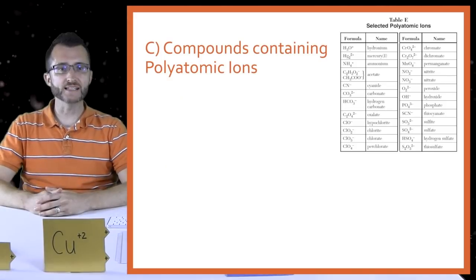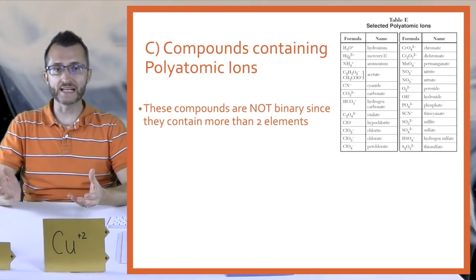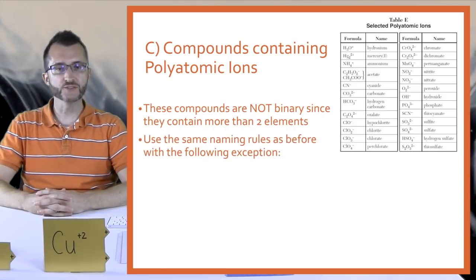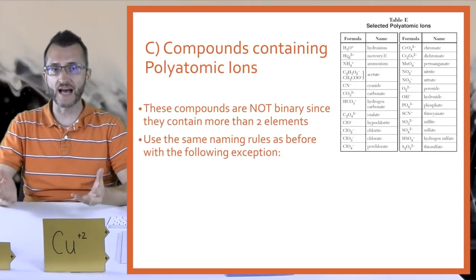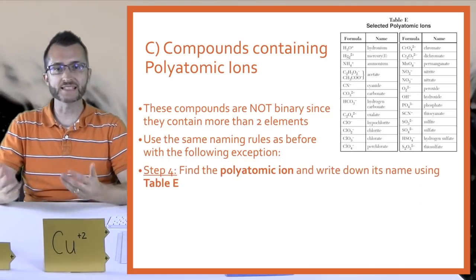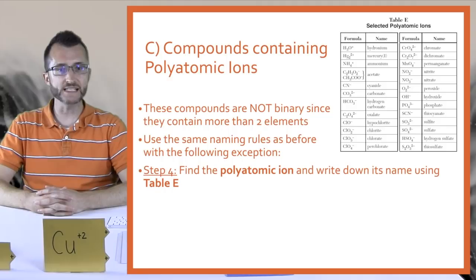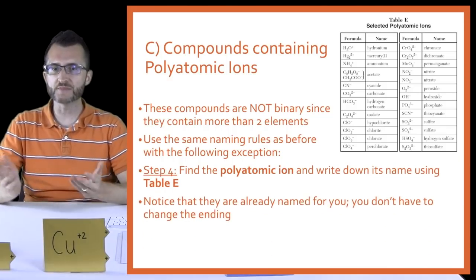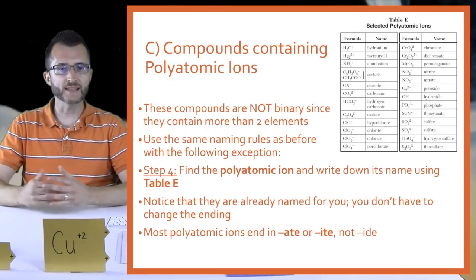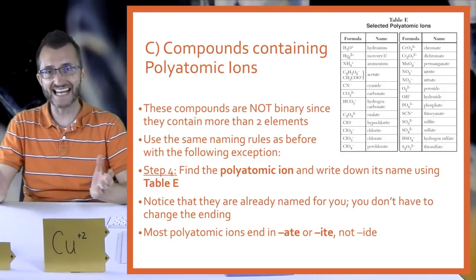Compounds containing polyatomic ions. These compounds are not binary since they contain more than two elements. Use the same naming rules as before with the following exception: in step four, find the polyatomic ion and write down its name using table E. Notice that they are already named for you — you don't have to change the ending. Most polyatomic ions end in -ate or -ite, not -ide.